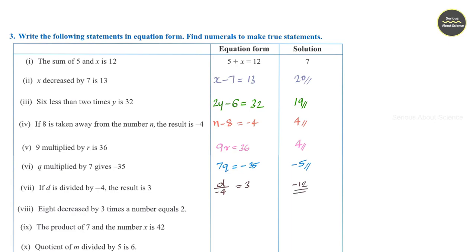Eighth question: eight decreased by 3 times a number. We write 8 minus 3 times h is equal to 2. Solving this, we get h equal to 2.